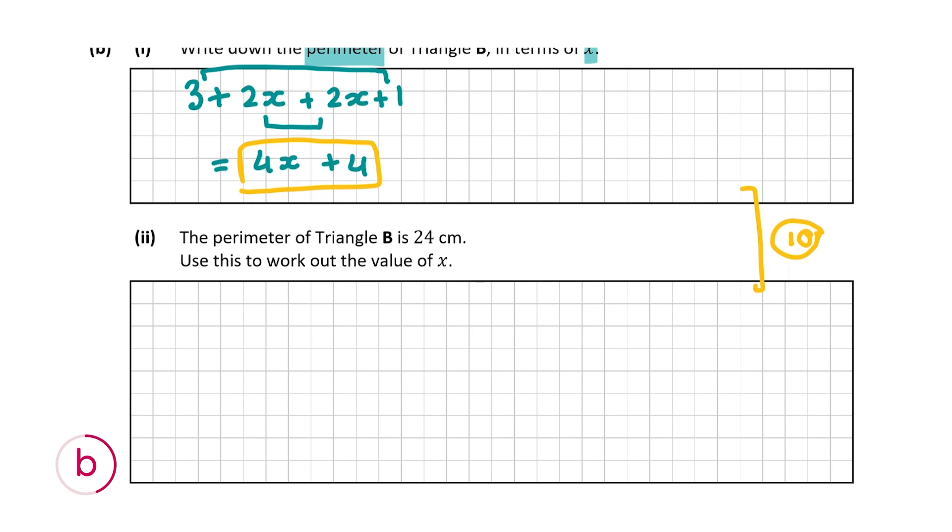So the second part follows on from B part 1. It tells us that the perimeter of triangle B is 24 centimeters and it asks us to use this to work out the value of X. So 4X plus 4 is the perimeter but we're told that the perimeter is 24. So let's work out the value of X. So 4X is equal to 24 minus 4 because we're bringing this across and it has to change its sign.